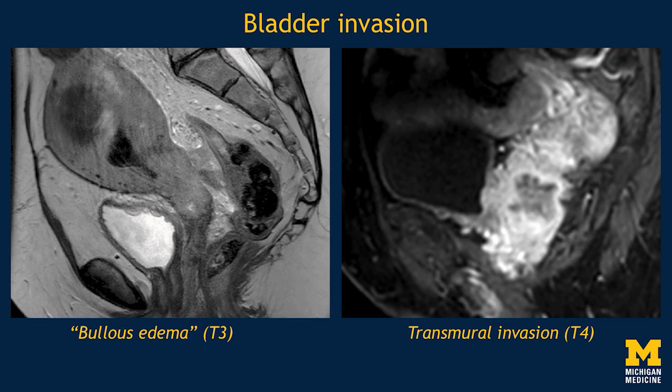Here are two examples of bladder invasion. There's a distinction between so-called bullous edema — a blistering look on the inside of the urinary bladder when the tumor has simply invaded the submucosal space — versus transmural invasion, when there's actually tumor enhancing and growing all the way through the bladder wall. That's something you could see with cystoscopy — you'd actually see tumor there and be able to biopsy it. These two have different staging implications. There is a distinction between superficial and deep invasion of adjacent organs.